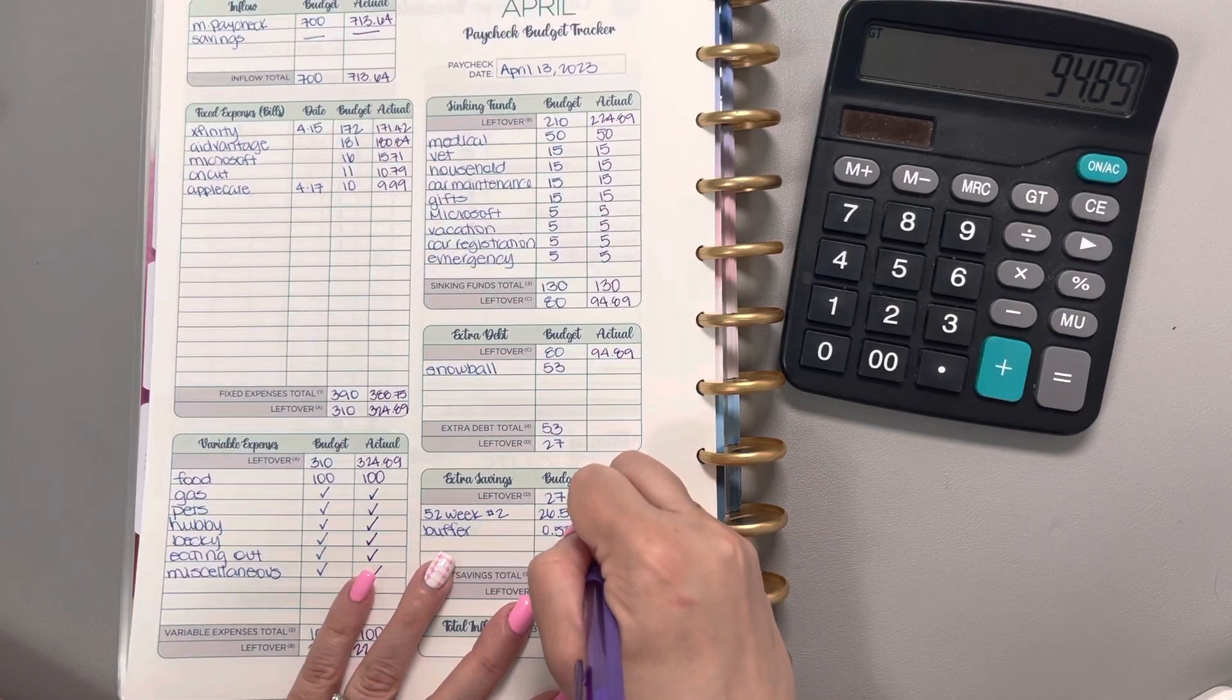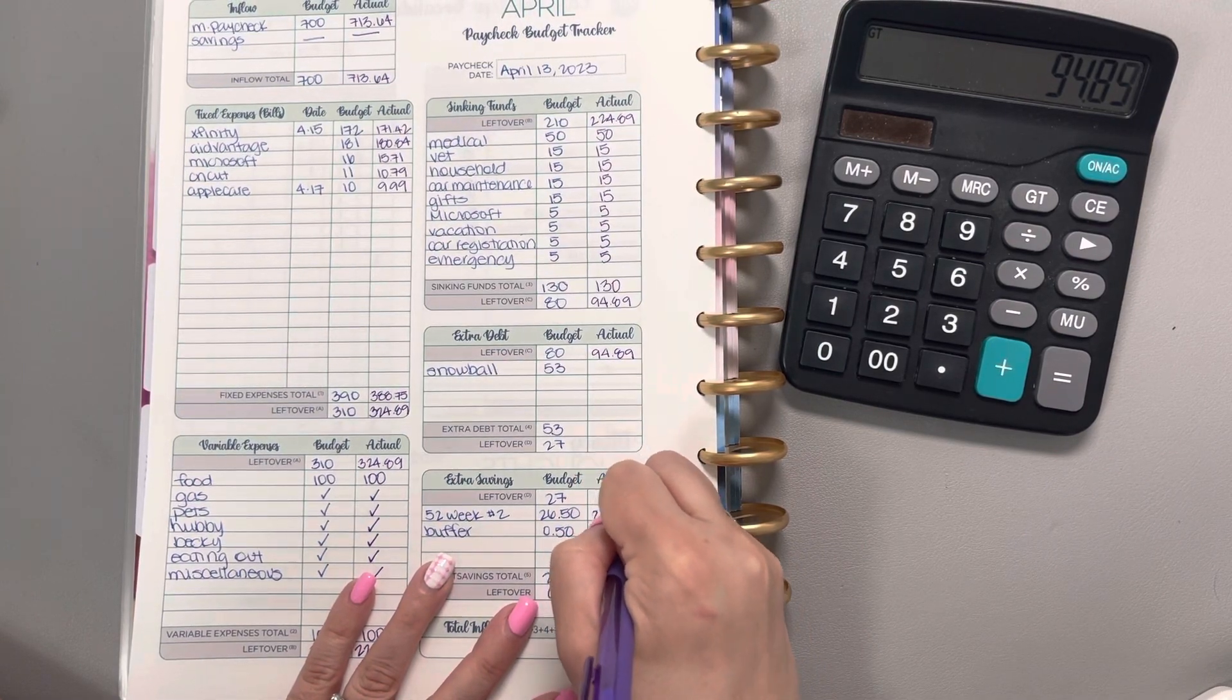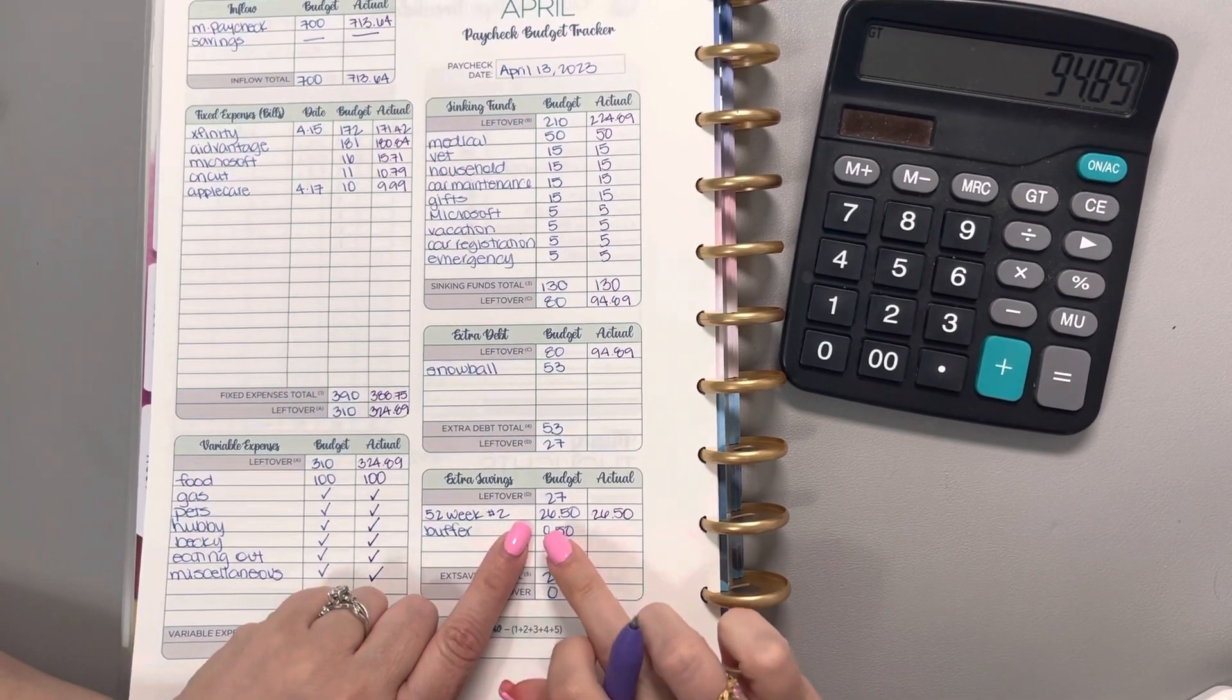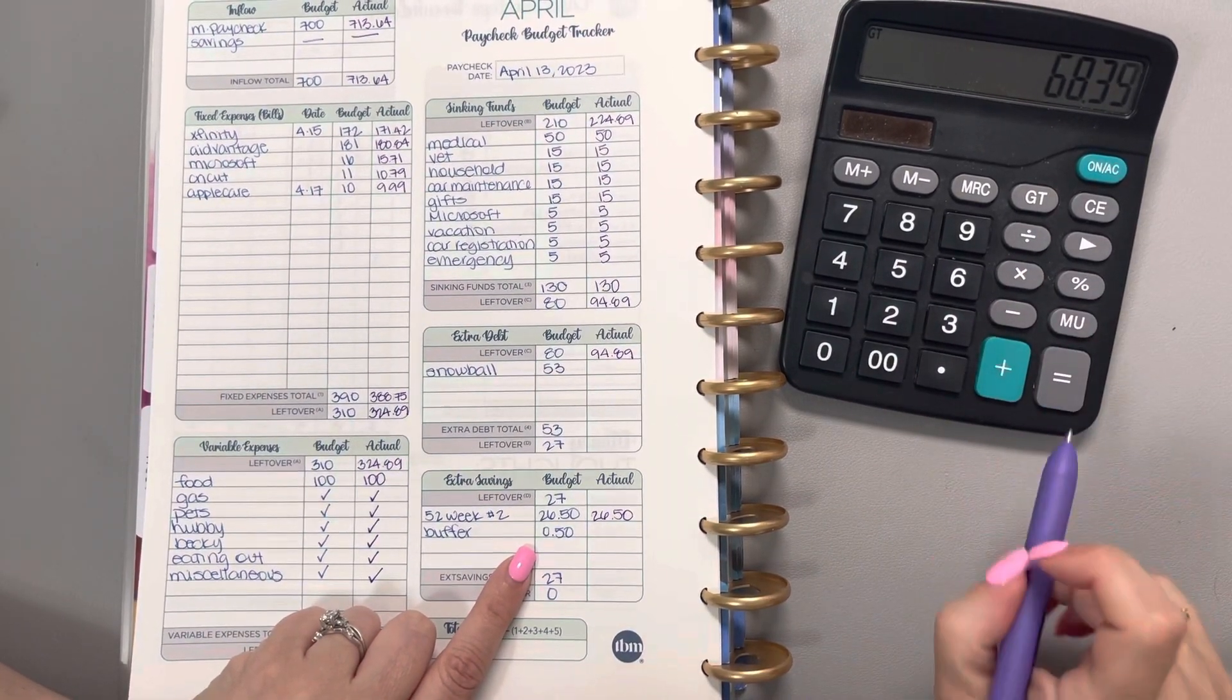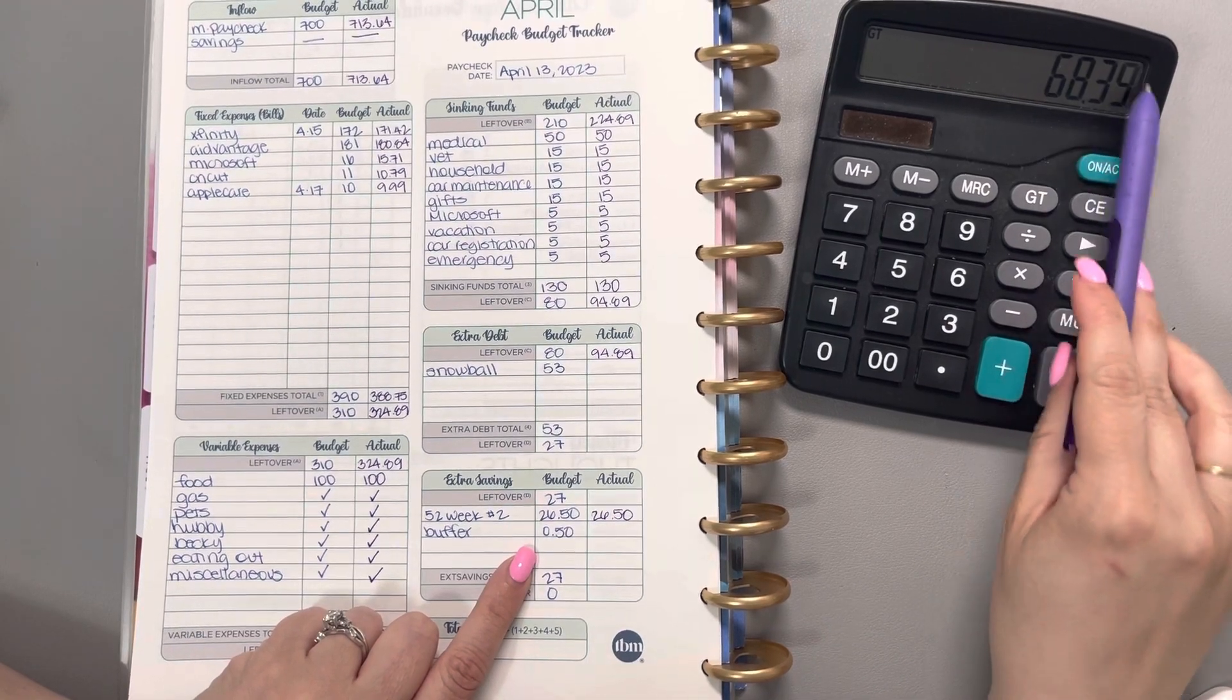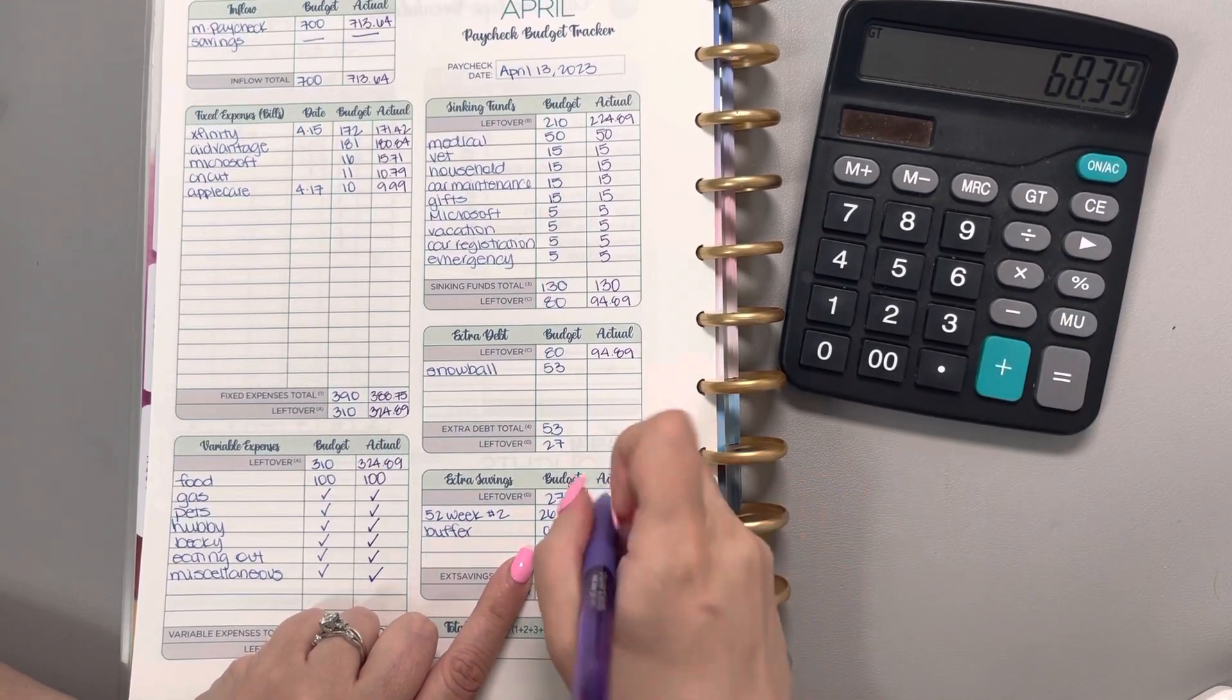$26.50 is going into our 52-week challenge, which goes towards our moving fund. I'll take the $26.50 away from there, and that will leave us with $0.39 that will go into the buffer.